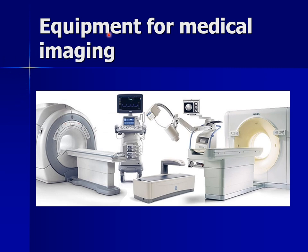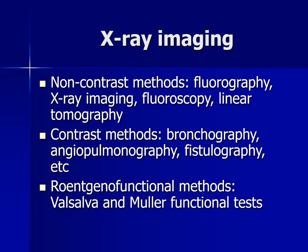On this slide you can see equipment for medical imaging: MRI, ultrasound, equipment for densitometry, x-ray machine, and also CT scan. X-ray imaging has non-contrast methods — fluorography, x-ray imaging, fluoroscopy, and linear tomography. The contrast methods of imaging of the chest are bronchography, angiopulmonography, fistulography, etc.